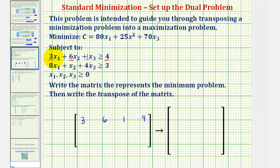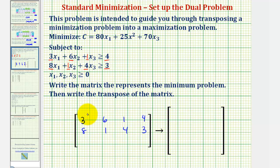For the second row we have eight, one, four, and three. So the second row is: eight, one, four, three. Notice that the first column represents the coefficients of x sub one, the second column represents the coefficients of x sub two, and the third represents the coefficients of x sub three.